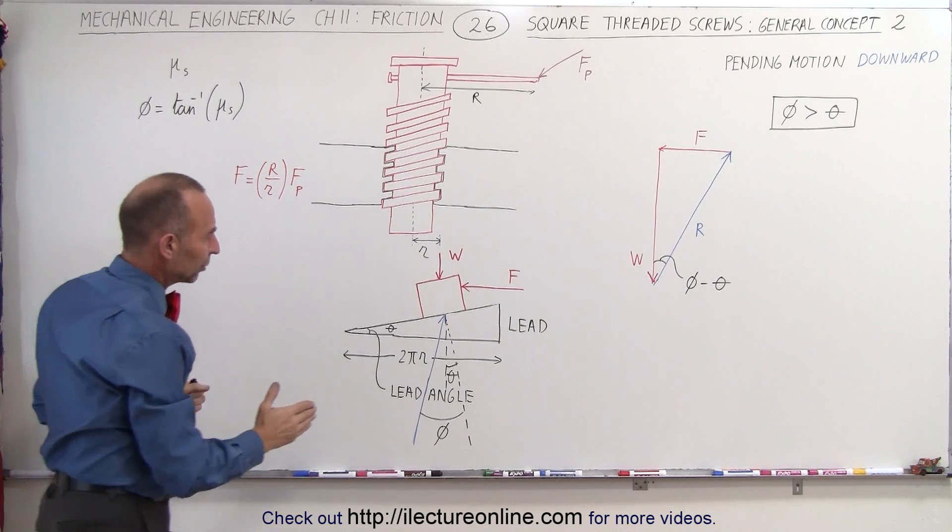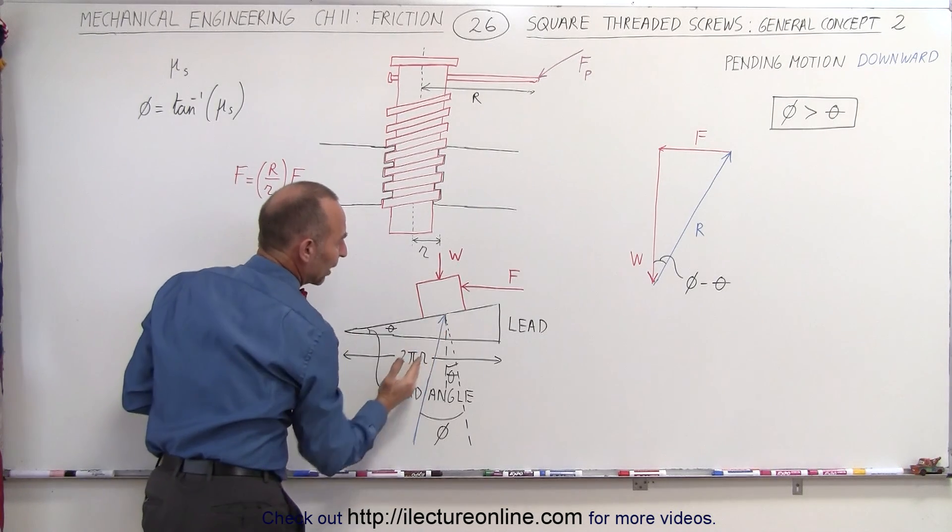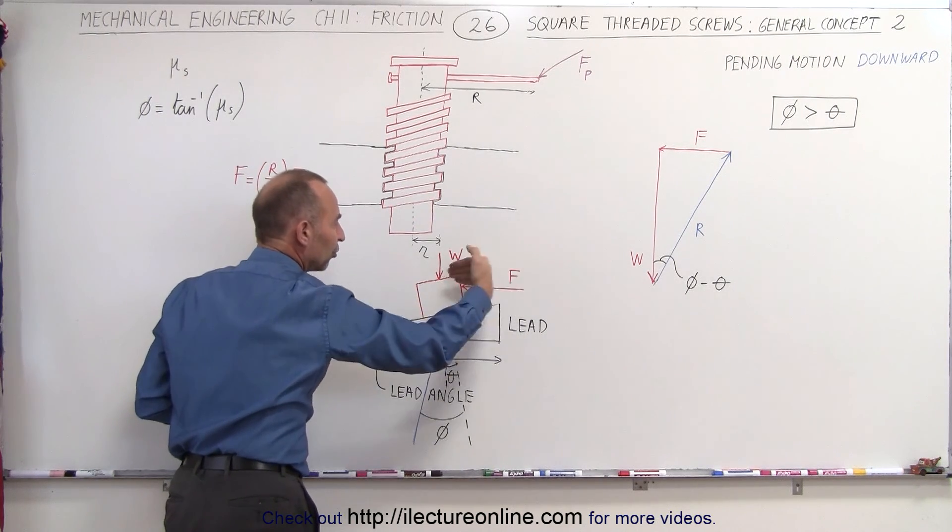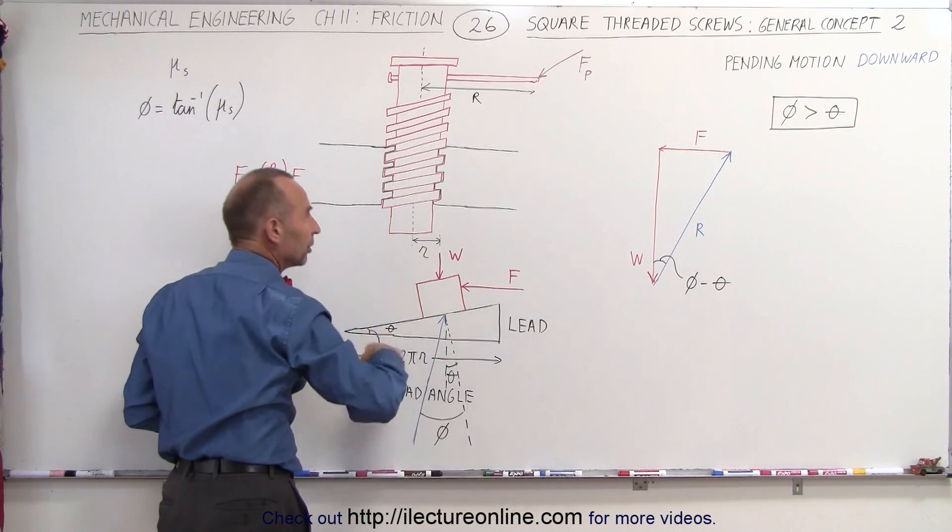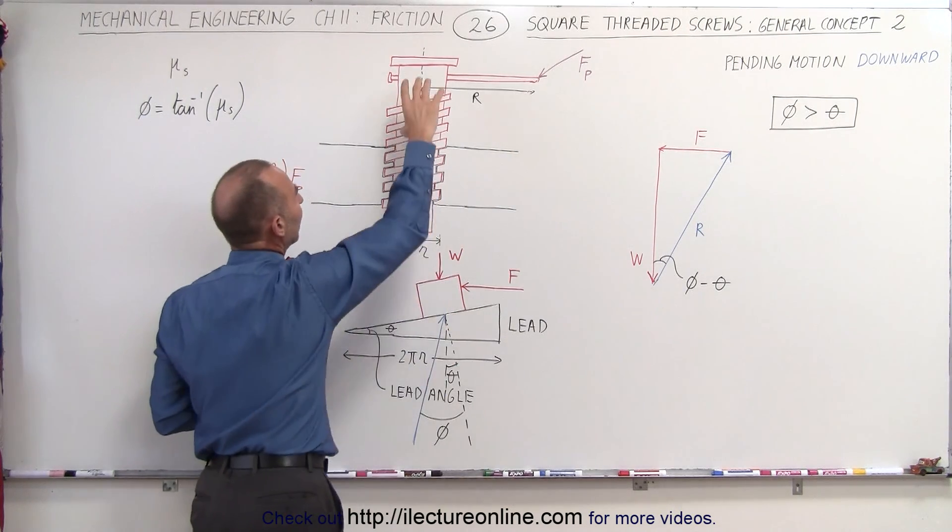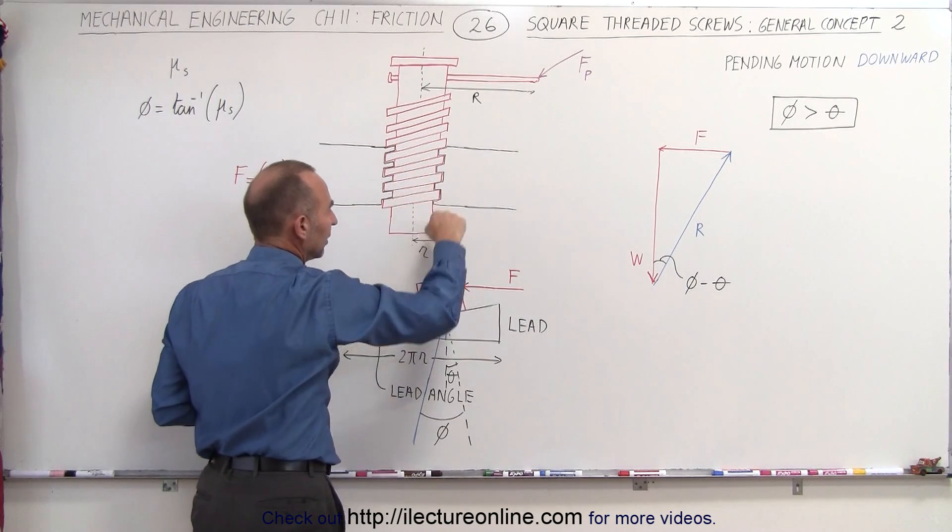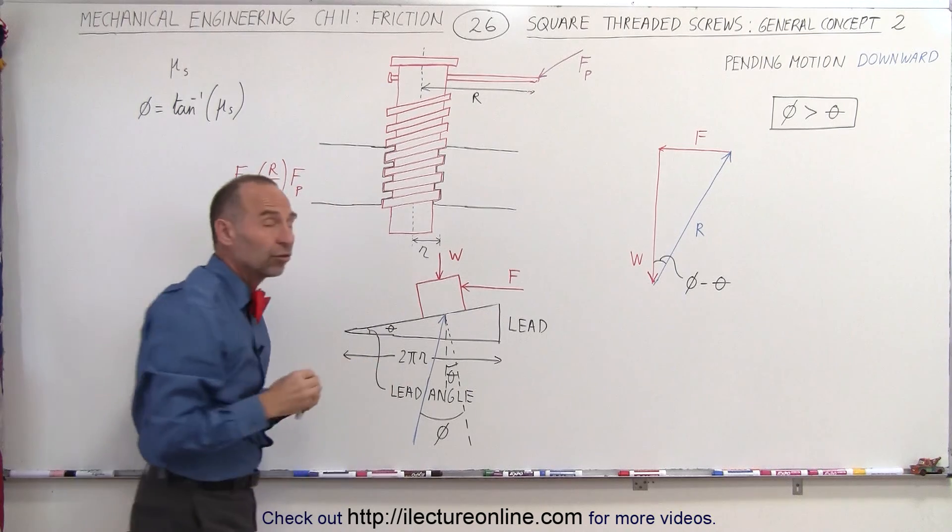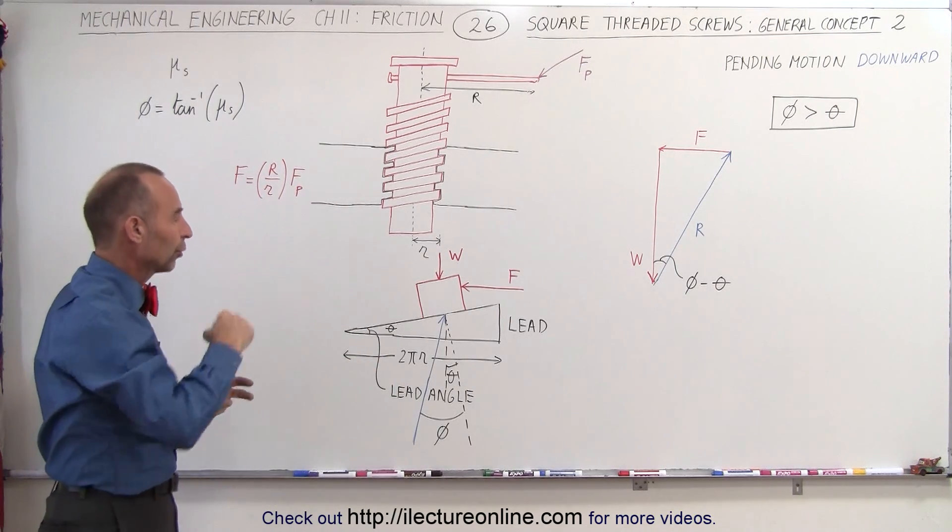Now notice that the reactionary force is in the opposite direction now. We're trying to apply a force this way, so the force is trying to push the thread downward. That's what we're trying to do here, we're trying to push the screw downward. Of course we have the weight helping us down, helping the screw down, and then we have the force applied helping the screw down. So you'll need less of the force in order to do that.